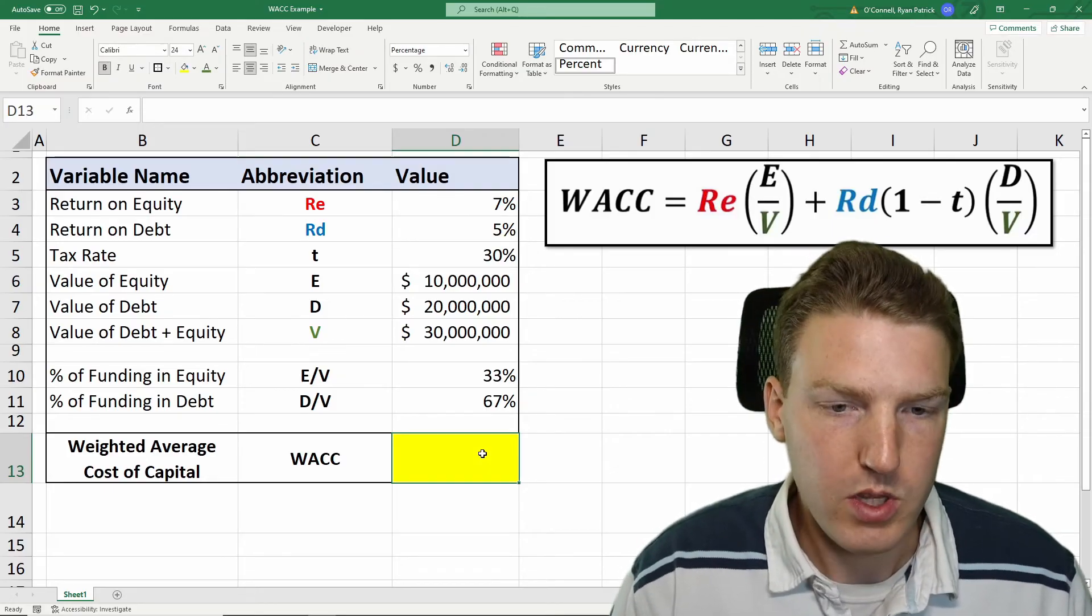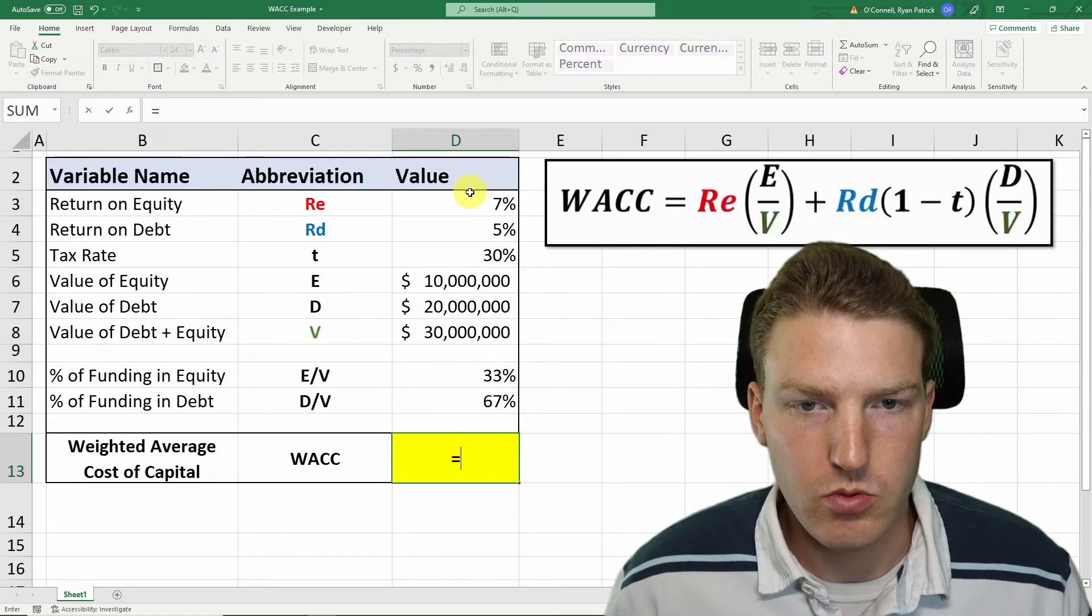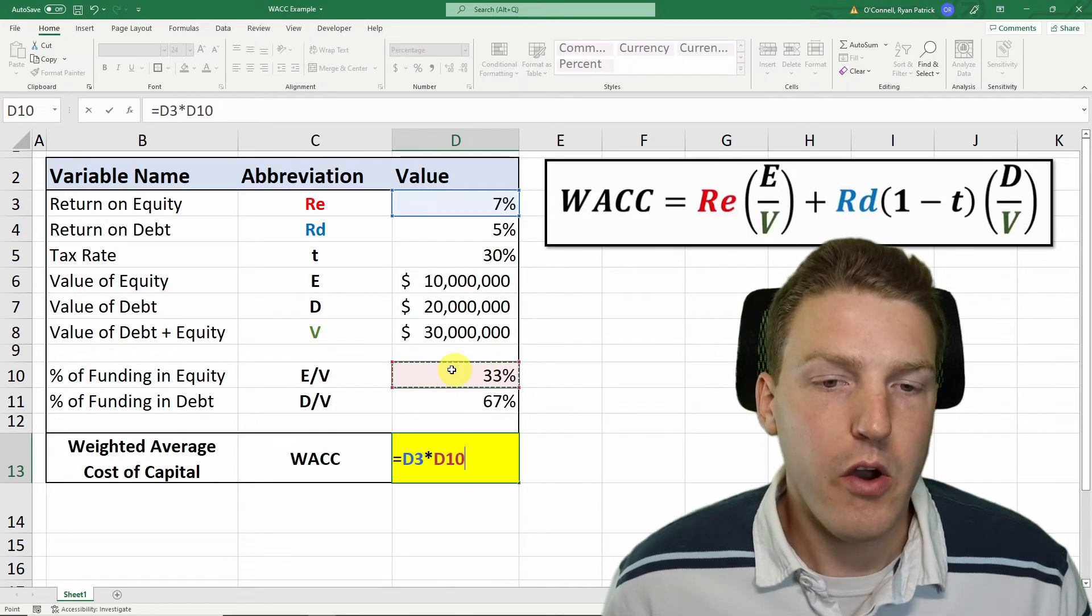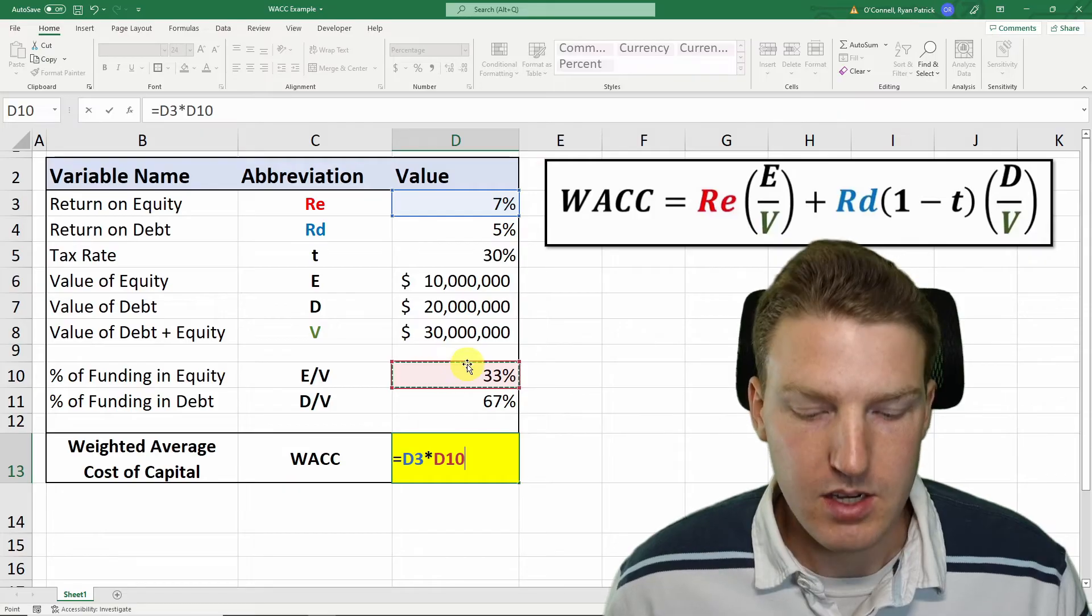Let's start with the equity piece, which will be equal to the return on equity of 7% multiplied by the weight of our business's capital that is in equity.